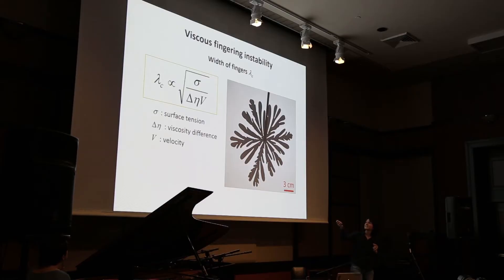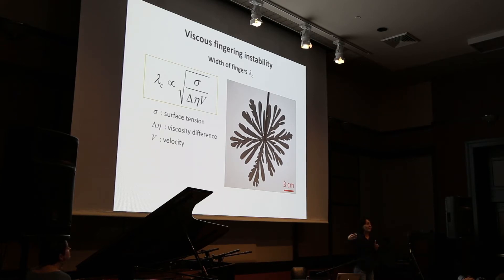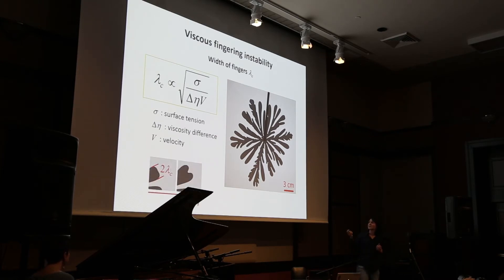If you look at a pattern like this, you might notice that these fingers all have approximately the same width. Indeed, fingers are characterized by a characteristic width, which we can describe by the surface tension between the fluids, the viscosity difference between the two fluids, and by the interfacial velocity — how fast we create these patterns. This critical width sets the finger width and also determines when fingers will branch: each time they reach twice the critical width, they split and create a new generation of branching patterns.